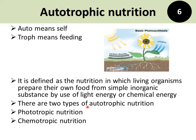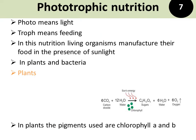There are two types of autotrophic nutrition: phototrophic nutrition and chemotrophic nutrition. The first type of autotrophic nutrition is phototrophic nutrition. The word phototrophic is also derived from two Greek words: photo and troph. Photo means light and troph means feeding. Phototrophic nutrition is the nutrition in which living organisms can manufacture their food in the presence of light.